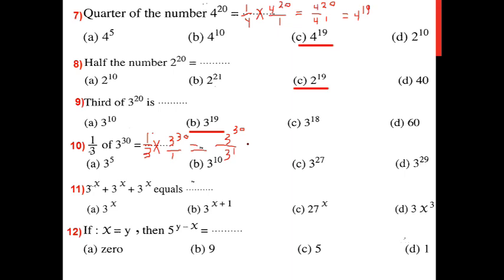So if I follow something like that: I write 1 over 3, times 3 power 30. I do up is up and down is down — that is 30 over 3 power 1. I do minus. It's equal to 3 power 29. So Hanin, that's your turn now.